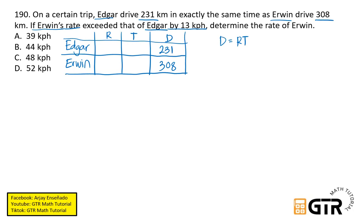Then another given, if Erwin's rate exceeded that of Edgar by 13 kilometers per hour. So mas mabilis daw si Erwin kaysa kay Edgar. So ang speed ni Edgar, or yung rate, hindi pa natin alam. So mag-assign tayo ng variable sa speed ni Edgar. Let's say that is x. And then ang speed naman ni Erwin ay exceeded that of Edgar by 13 kph. So therefore, ang rate ni Erwin is x plus 13.